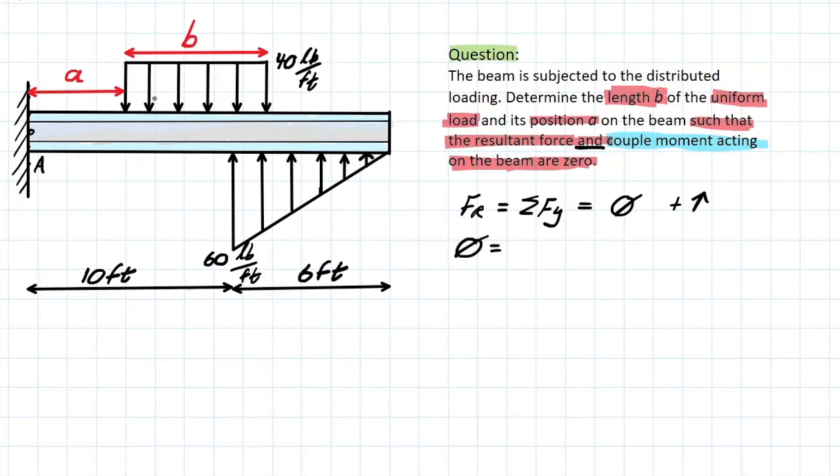So we have zero is going to equal to the first distributed load. It's acting downwards, so we have negative 40 pounds per feet over the area, or the length of the span, which is B. And then for the second distributed load, we have positive acting upwards, one half since its triangular distribution, 60 pounds per feet. And then the span it covers, six feet.